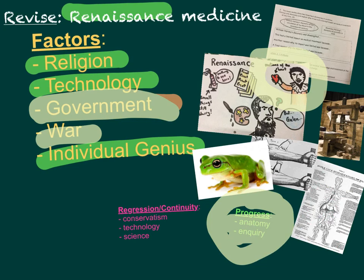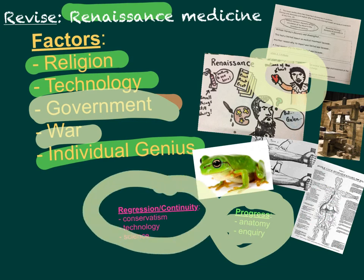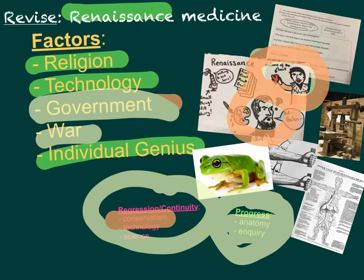However, there was some regression or at least continuity in this period as well. Conservative ideas meant not everyone was willing to accept the ideas of Harvey and Vesalius — it took a very long time for them to be accepted. Although science had started to help through inquiry, there were still problems in that microscopes weren't strong enough to see really small things like bacteria and germs.